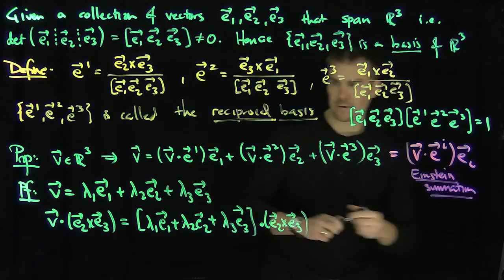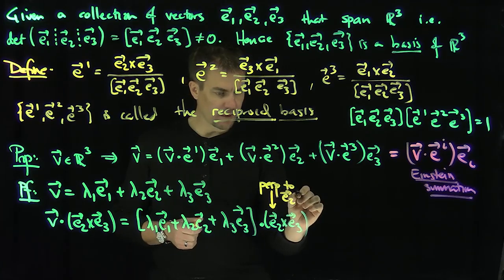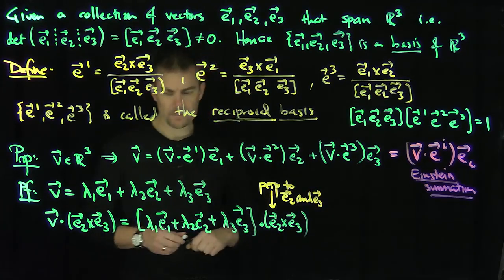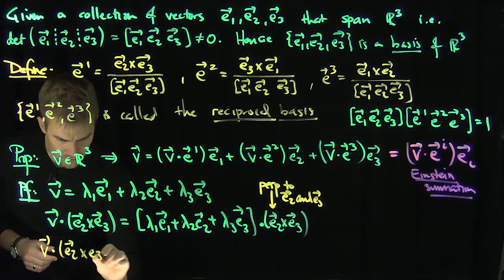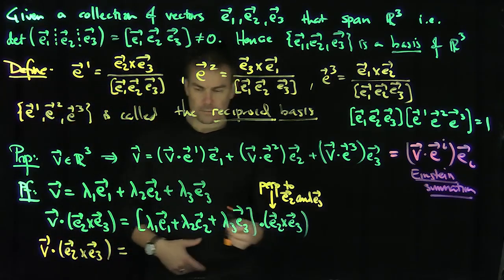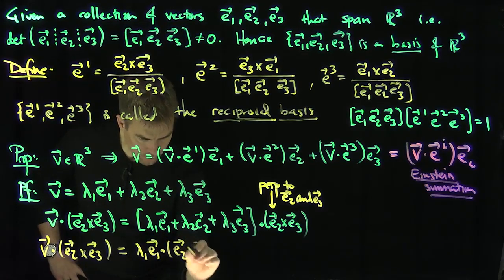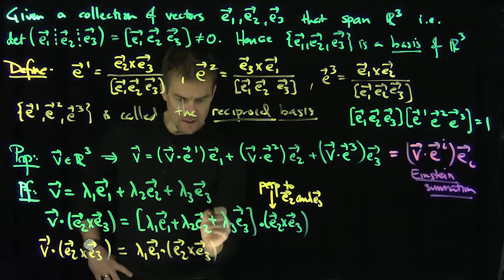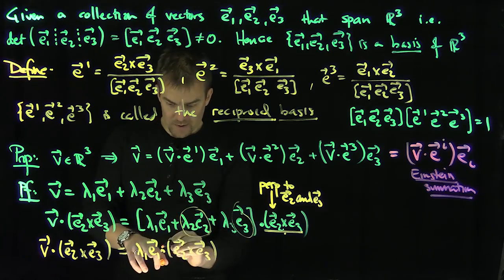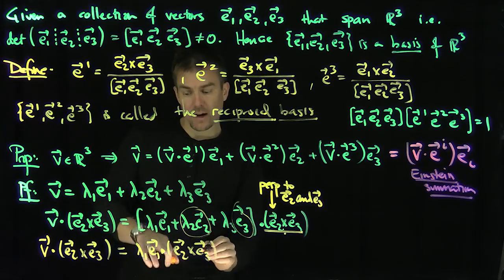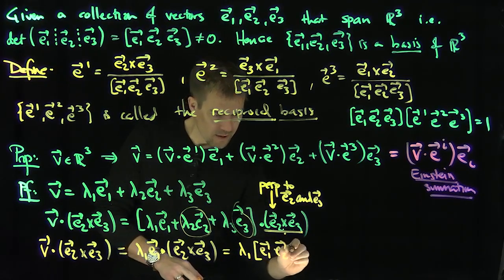And now the salient feature is that this vector over here is perpendicular to both E2 and E3. And so therefore, V dot E2 cross E3 is going to be lambda 1 E1 dot E2 cross E3. And then E2 dot this thing is going to be 0, and E3 dot this thing is going to be 0. Now, what do we know about E1 dot E2 cross E3? That's the triple scalar product of E1, E2, and E3. So this is exactly equal to lambda 1 times the determinant E1, E2, and E3.